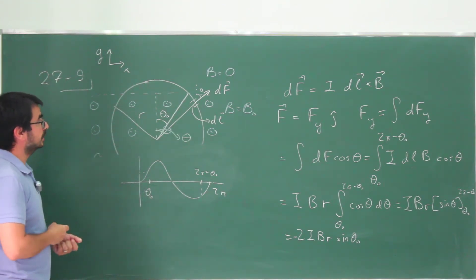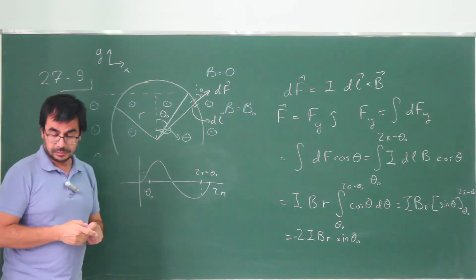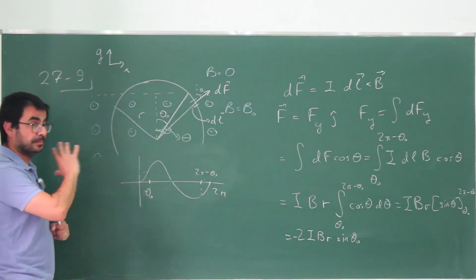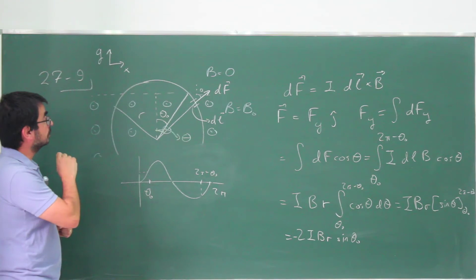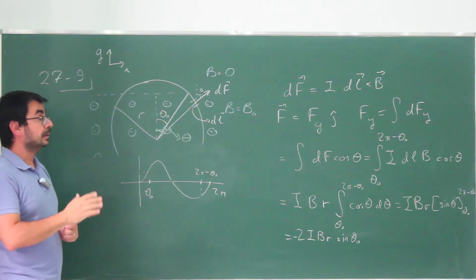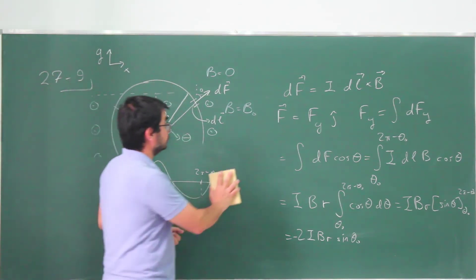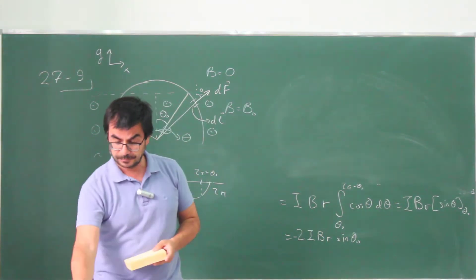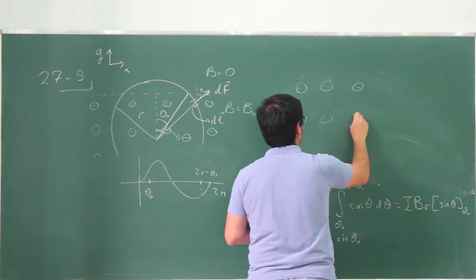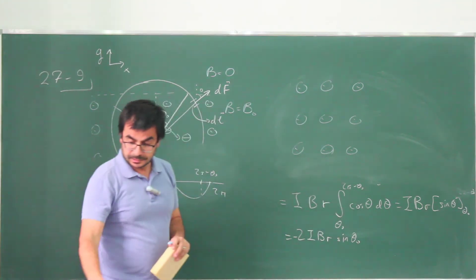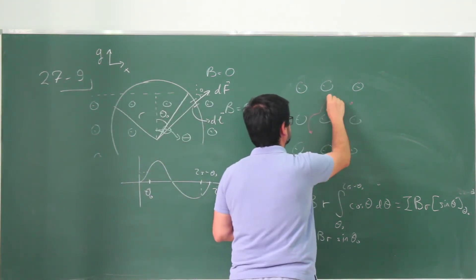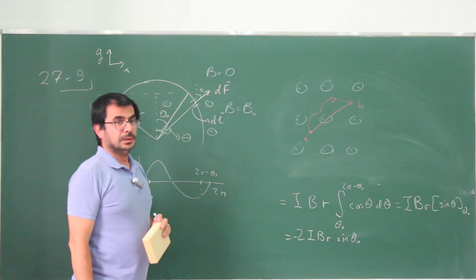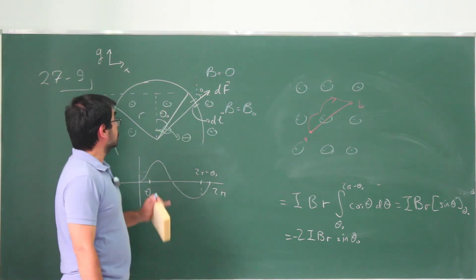This was the hard way. There is an easier way to solve this problem. Looking ahead to problem 11, they give a theorem: if you have a uniform magnetic field and two points connected by a wire completely in the plane, instead of integrating over that whole wire, you can just look at the straight line segment that connects those two points — the force will be the same.